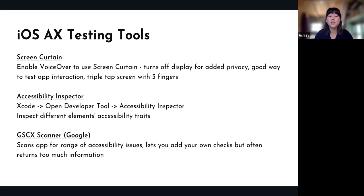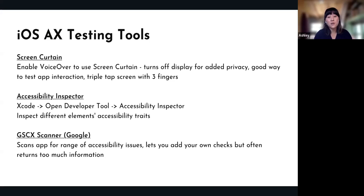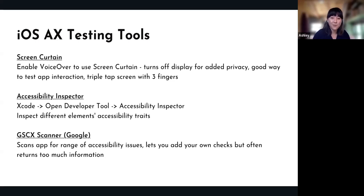The Accessibility Inspector is not a substitute for actually testing using VoiceOver, but it is a helpful tool while developing. There's also the GTX Scanner by Google, which scans the app for a range of accessibility issues — not just whether accessibility labels are present, but also touch target sizes, color contrast for colorblind users, and it lets you add your own checks. If you're just checking for basic accessibility labels it might return too much information, but for a comprehensive scan it's quite helpful. It overlays onto your app screen and tells you everything that's not accessibility compliant.